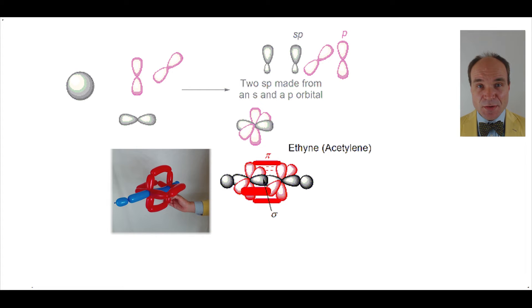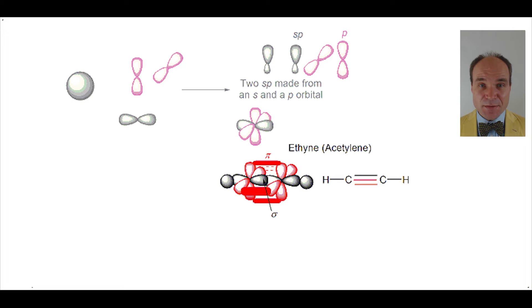We can also draw this molecule in Kekule form. Notice that we draw three lines between the two carbon atoms. This is called a triple bond. One of the lines represents the sigma bond. The other two lines represent the pi bonds.